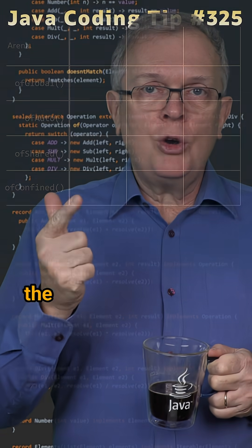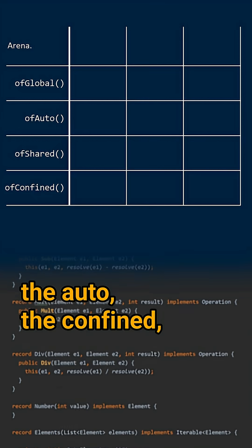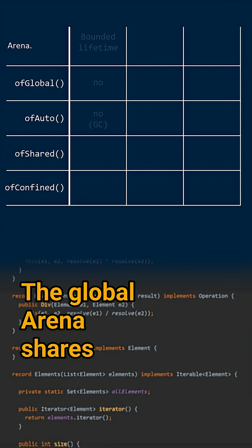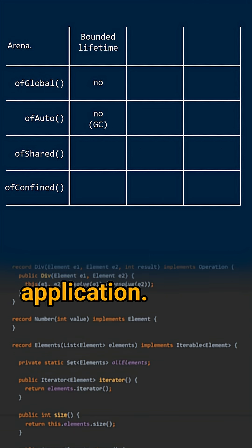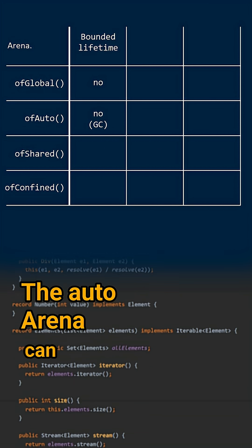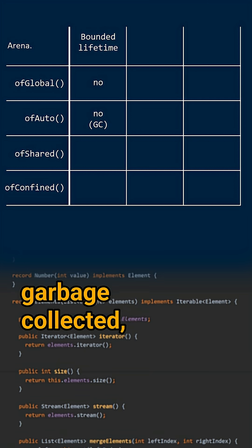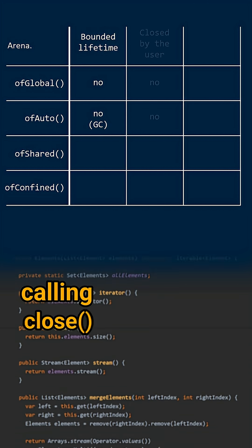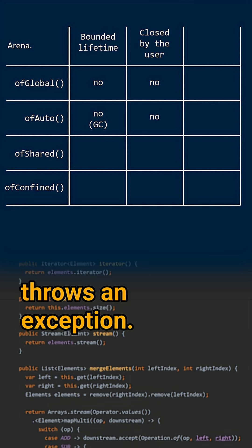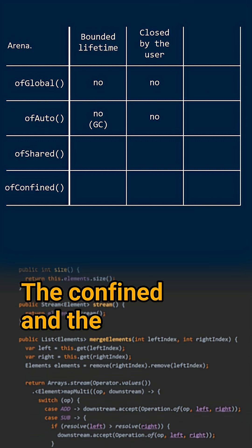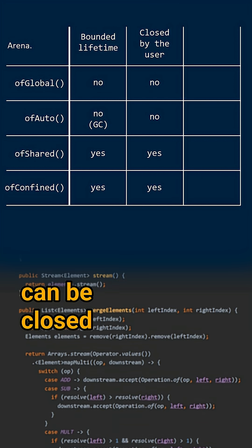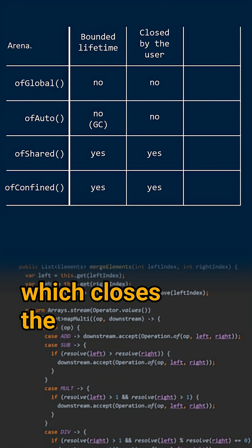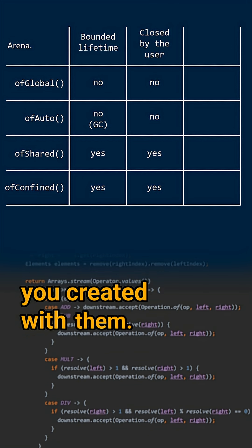They are the global, the auto, the confined, and the shared arenas. The global arena shares the life cycle of your application. The auto arena can be garbage collected, but as for the global arena, calling close on it throws an exception. The confined and the shared arenas can be closed by calling close on them, which closes the memory segments you created with them.